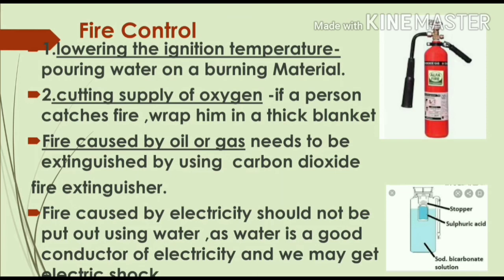Now we have seen the necessary conditions for combustion. These conditions are necessary to generate fire and for a substance to undergo the combustion process. If even one of these conditions is missing, fire will not occur. So these are the principles we will also use to put out fire — we can cut off one of these conditions to extinguish a fire and control it.